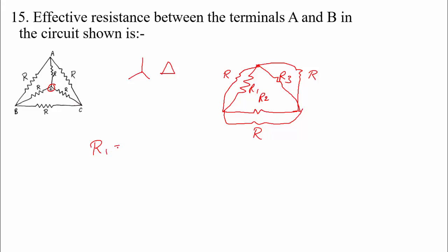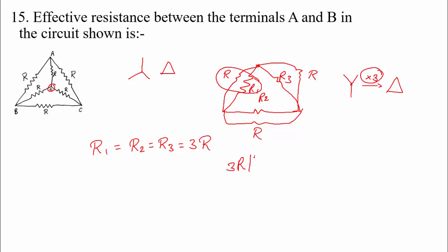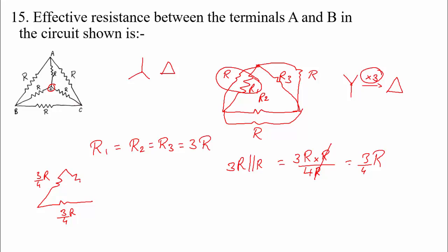R1, R2, and R3 each equal 3R, because when converting from star to delta with all equal resistances, the multiplication factor is 3. So 3R is in parallel with R. The equivalent value is 3R × R / (3R + R) = 3R/4, that is 3/4 times R. You will be getting three equivalent values each of 3R/4, or 0.75 times R, at all three branches.